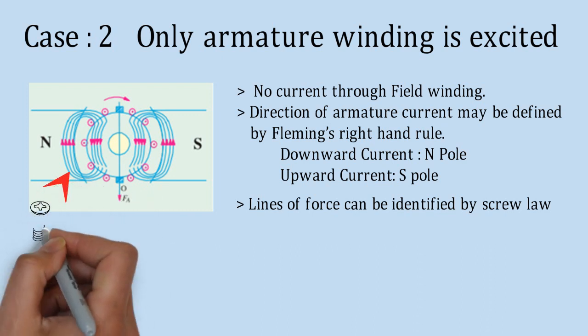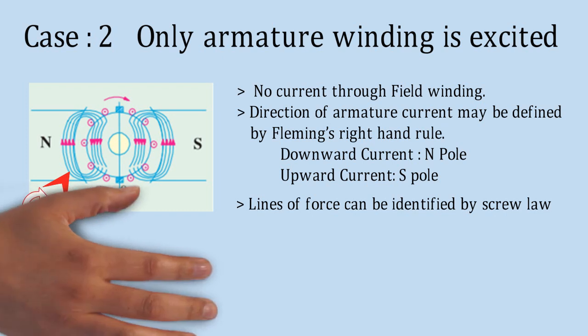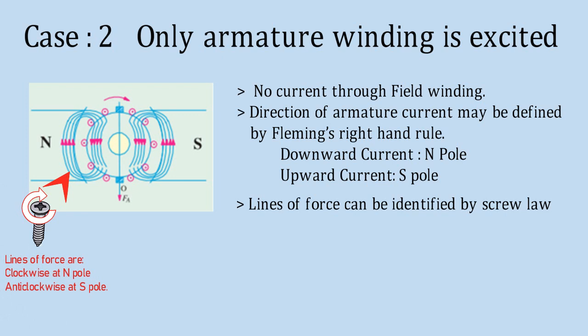So, near N pole, it becomes clockwise direction as current is entering in downward direction. However, in S pole, it is in anticlockwise direction. FA denotes magnitudes and direction of armature flux.